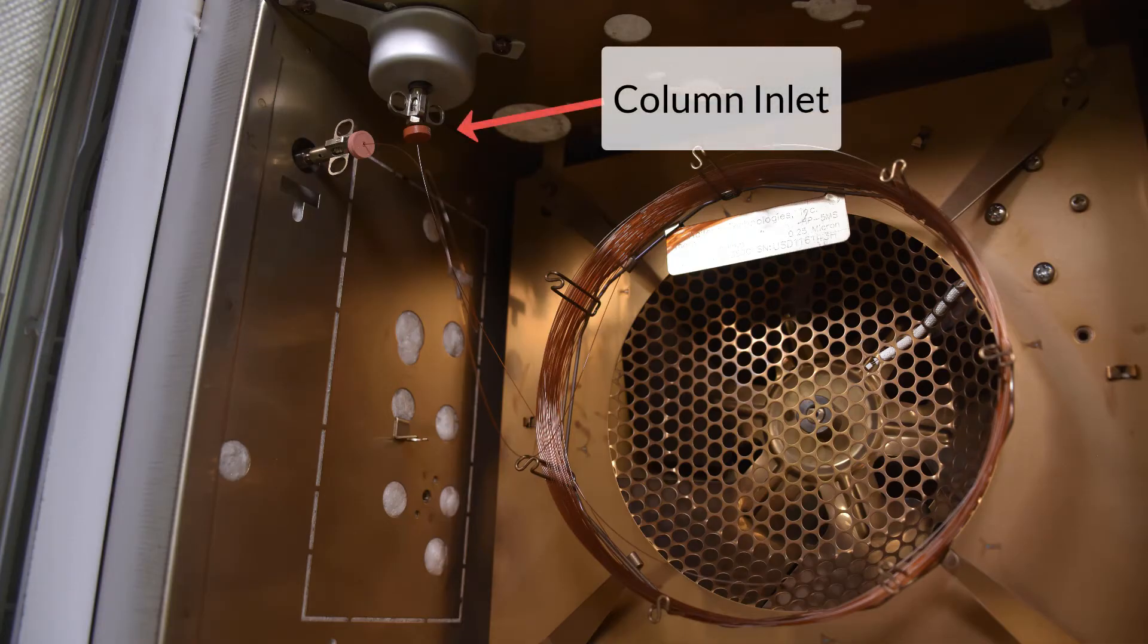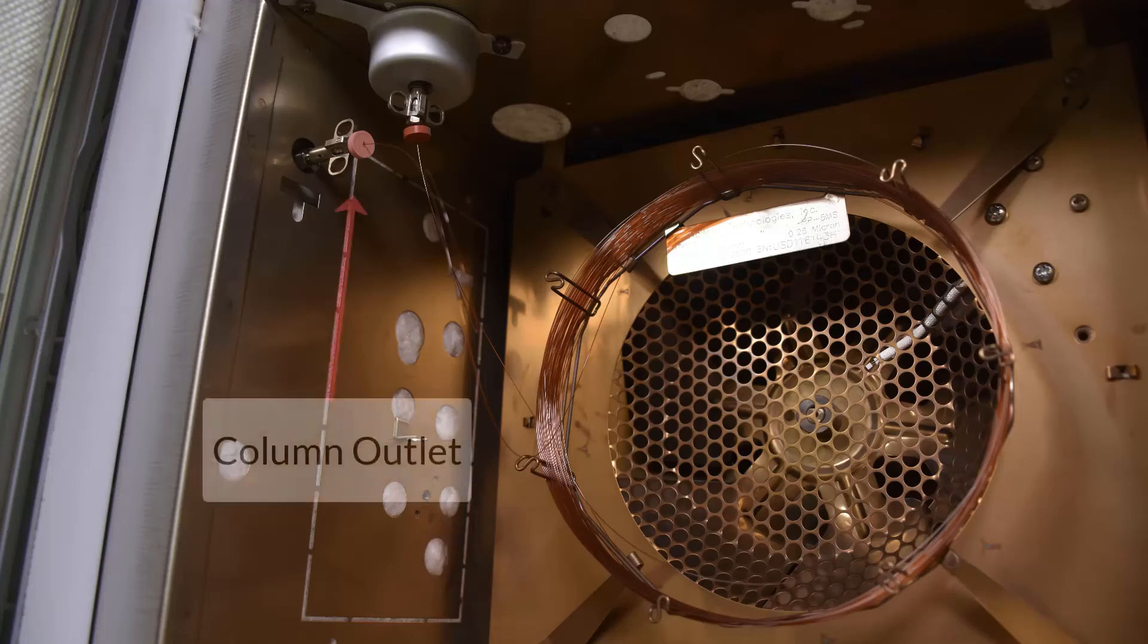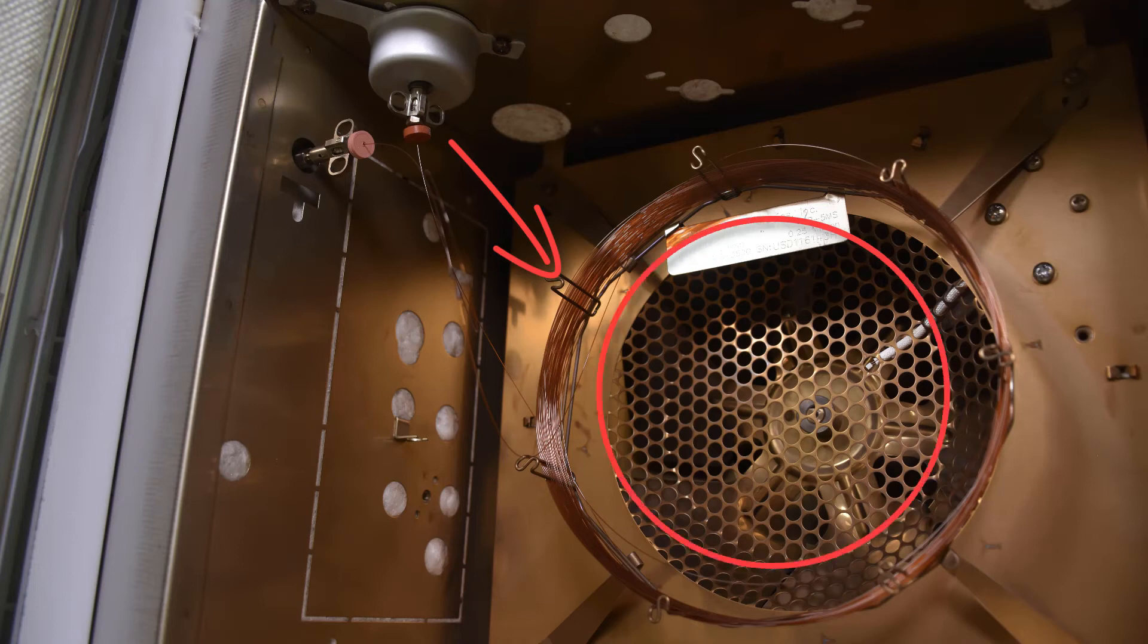Here is the sample inlet. This is where the sample is introduced to the column. Here is the sample outlet. This is where the sample moves from the column to the detector. The mobile phase runs from the start of the instrument through the column and to the detector.